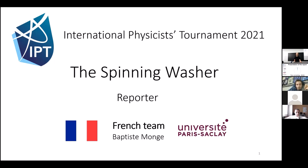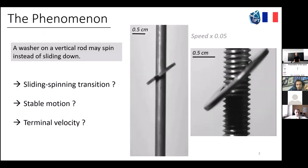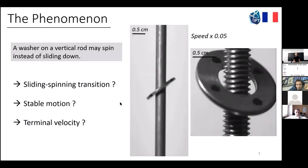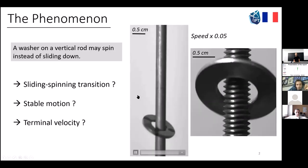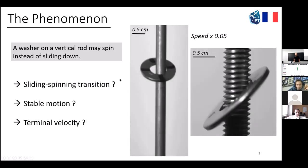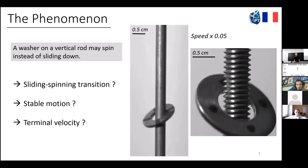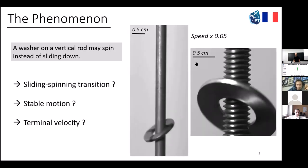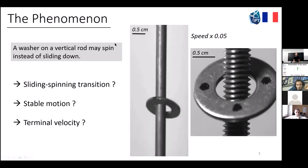Hi everyone, I'm Baptiste from the French team, and this is our work on the spinning washer. If you take a washer, which is this ring-like object, and you spin it around the rod, it may keep on spinning instead of just sliding down. It works for both smooth and threaded rods, as you can see.